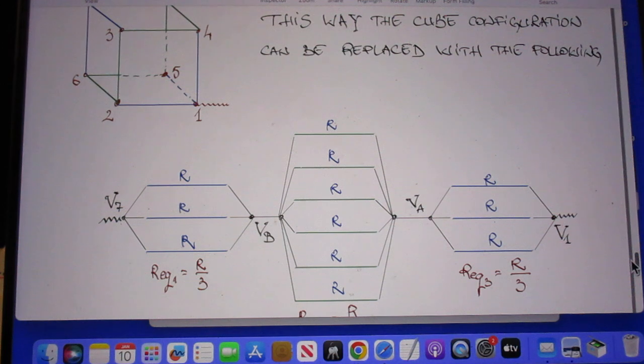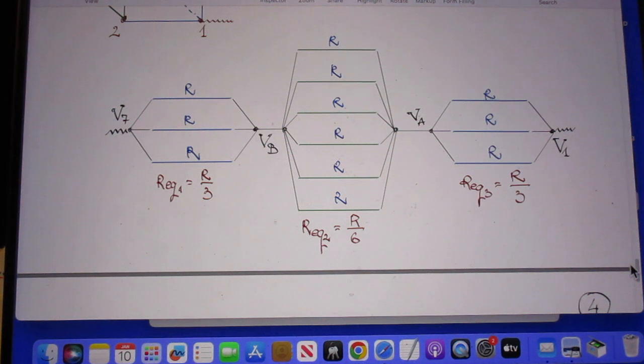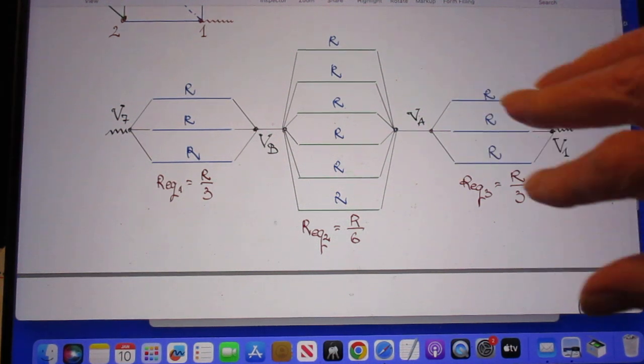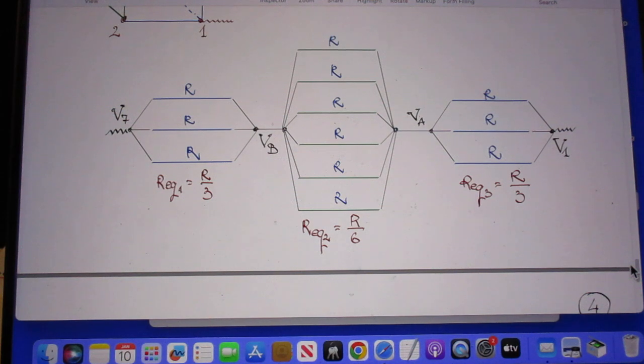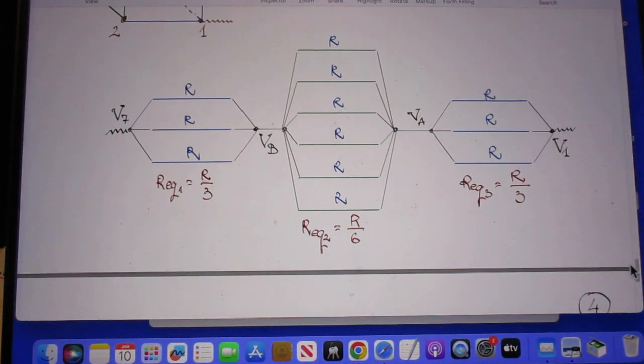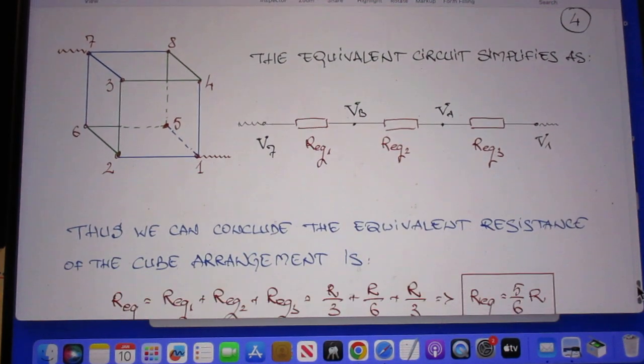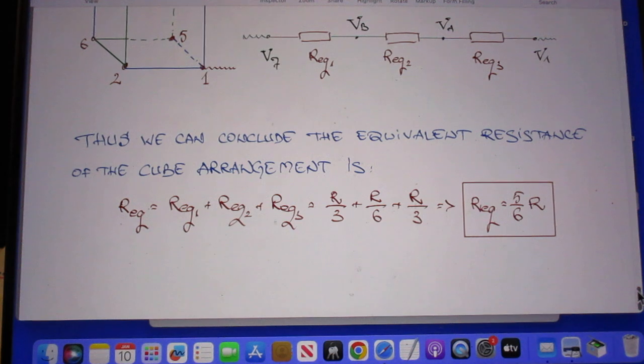So now the circuit can be replaced in this way, that would be your high school way. Three parallel and then six parallel and then again three parallel with all of them in series from V1 to V7. And he comes to the same conclusion that the equivalent resistance is 5/6 R.